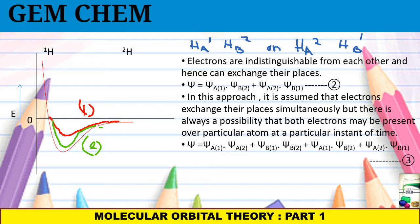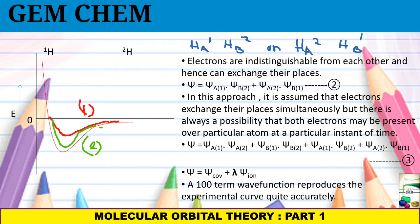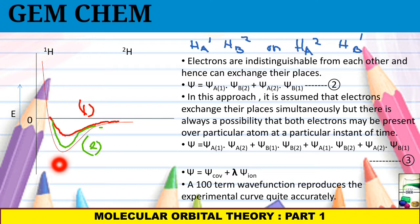Ultimately, we can write ξ as ξ(covalent) plus λ × ξ(ionic), where λ is a constant much less than 1. A hundred terms of the wave function are needed to reproduce the experimental curve accurately. Here only four terms are present, bringing us partway toward the experimental curve — a hundred terms are required to reach it fully.